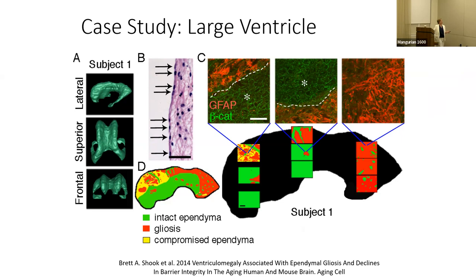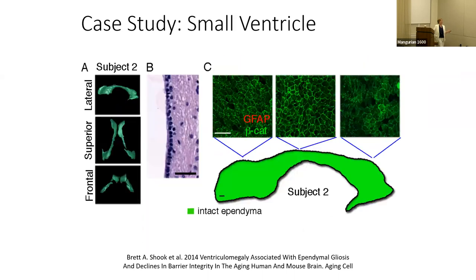For the large ventricle subject, we saw regions of normal ependymal cells, regions of scarring, and yellow indicating a transitional quasi-in-between state. For the 86-year-old with normal ventricle size, I expected some astrogliosis with age and wear, but when we looked at the surface, we saw just clear, beautiful, intact ependymal cells. So at 86 you can have a completely intact ependymal lining.